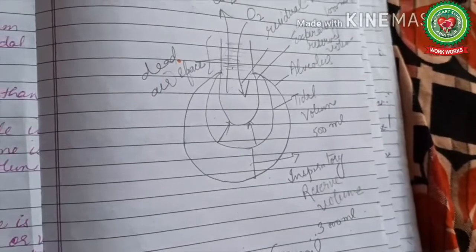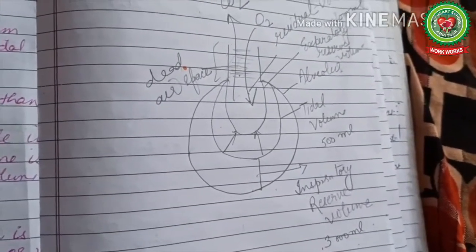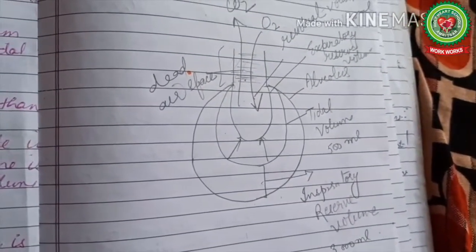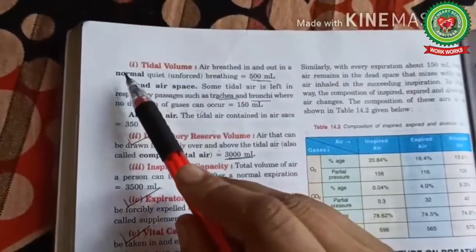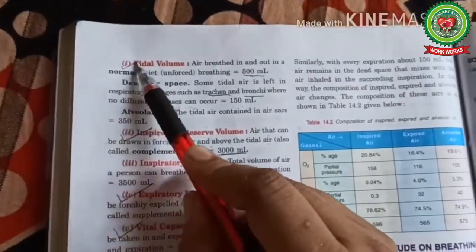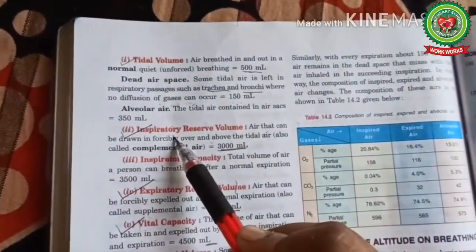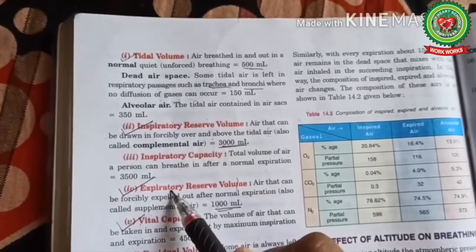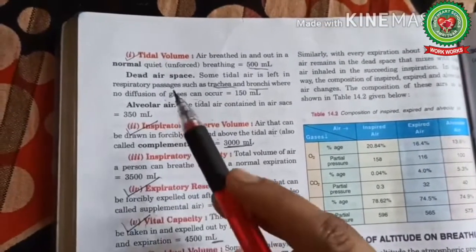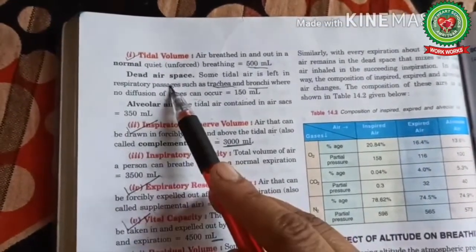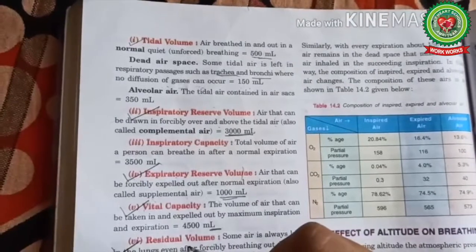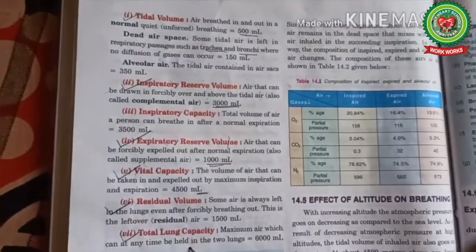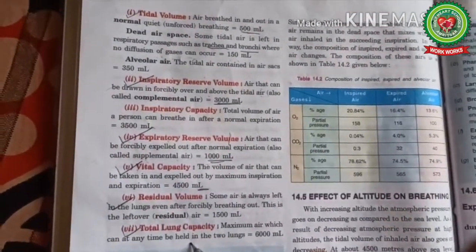Now look in your books at page number 14.6. Here it is written: tidal volume, inspiratory reserve volume, expiratory reserve volume, dead air space, residual volume, and total lung capacity. These we have now discussed.